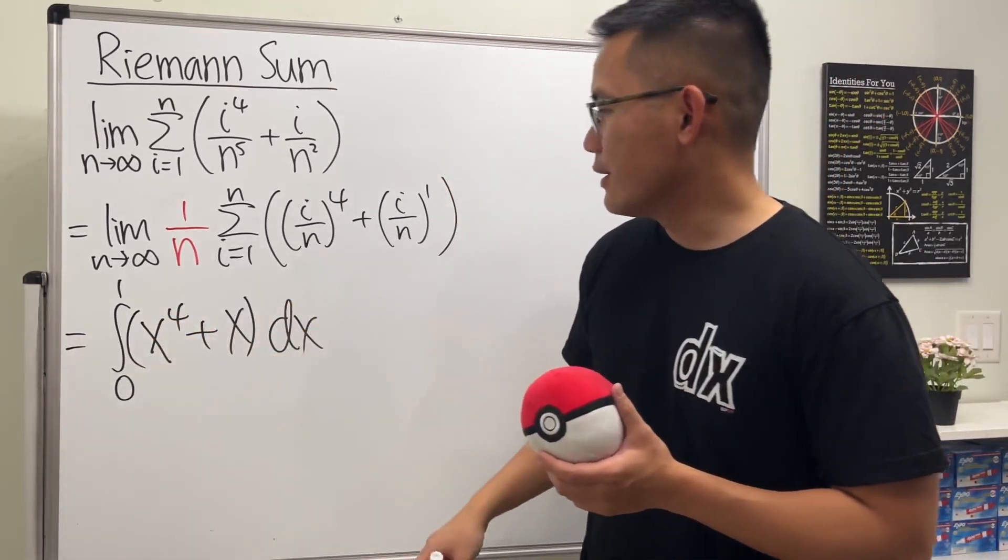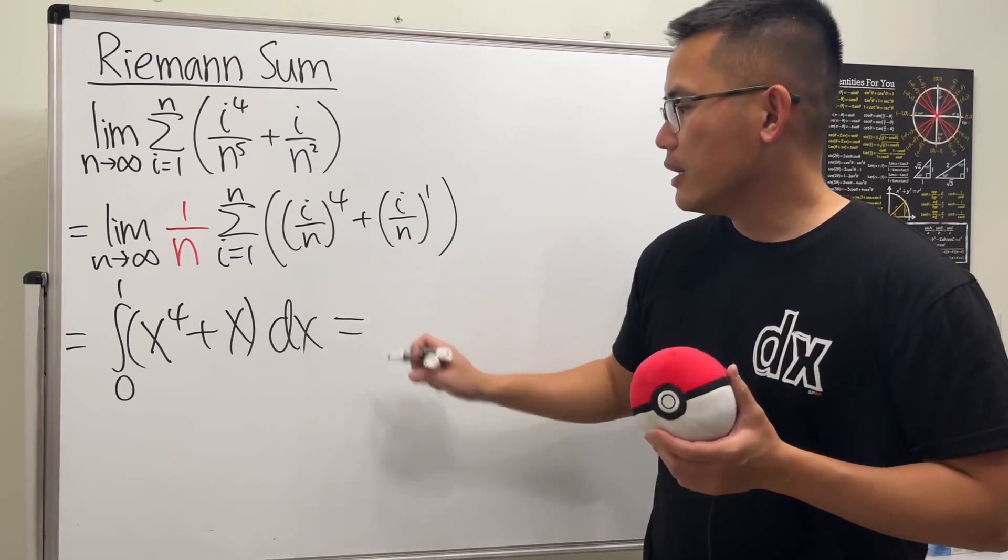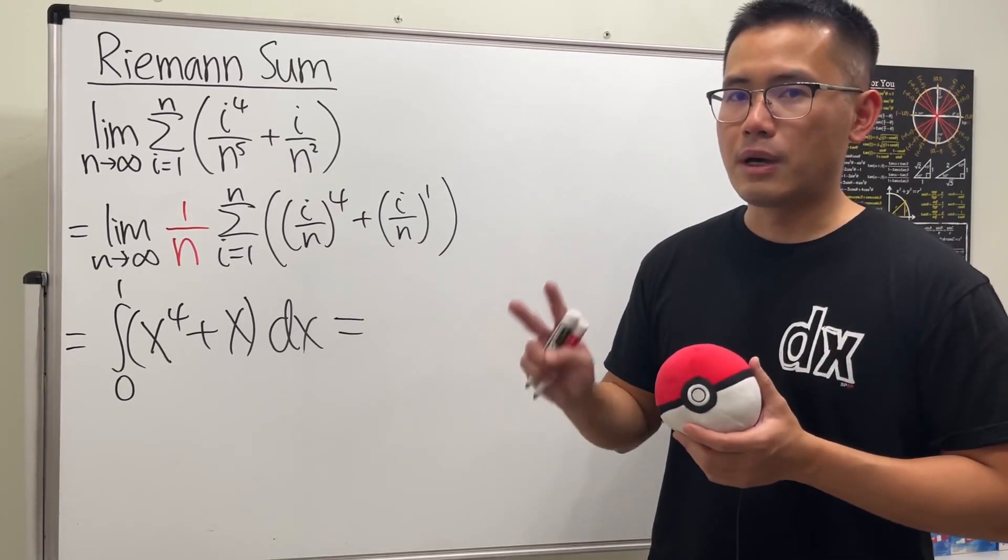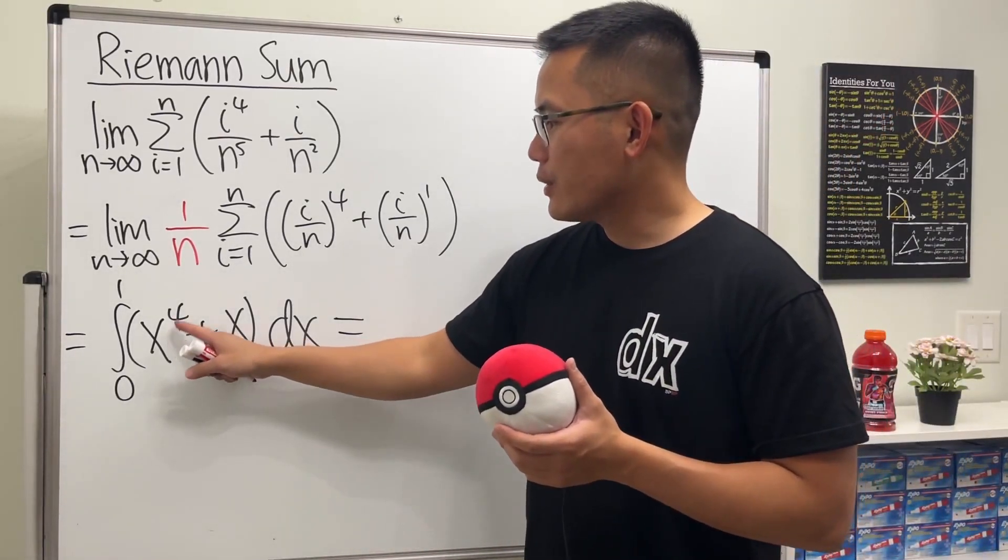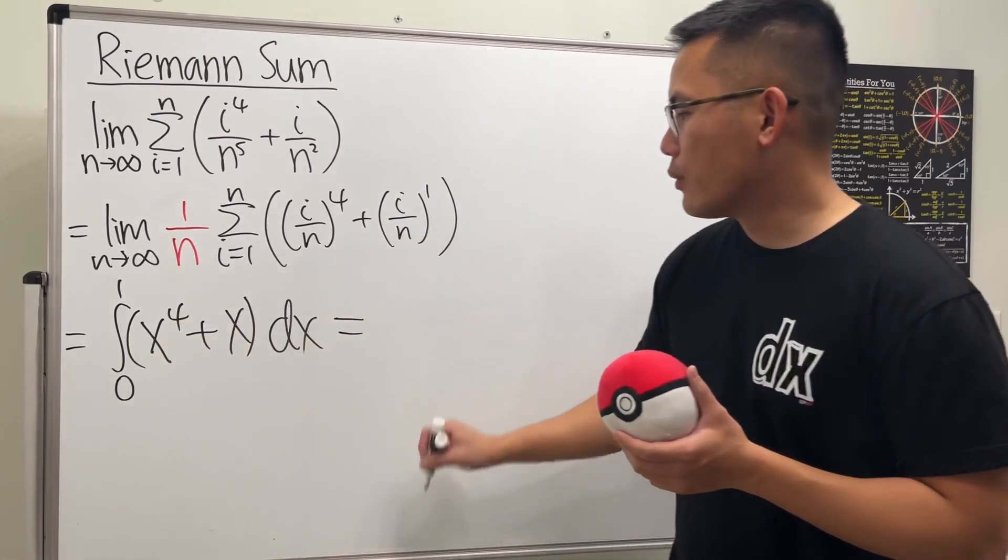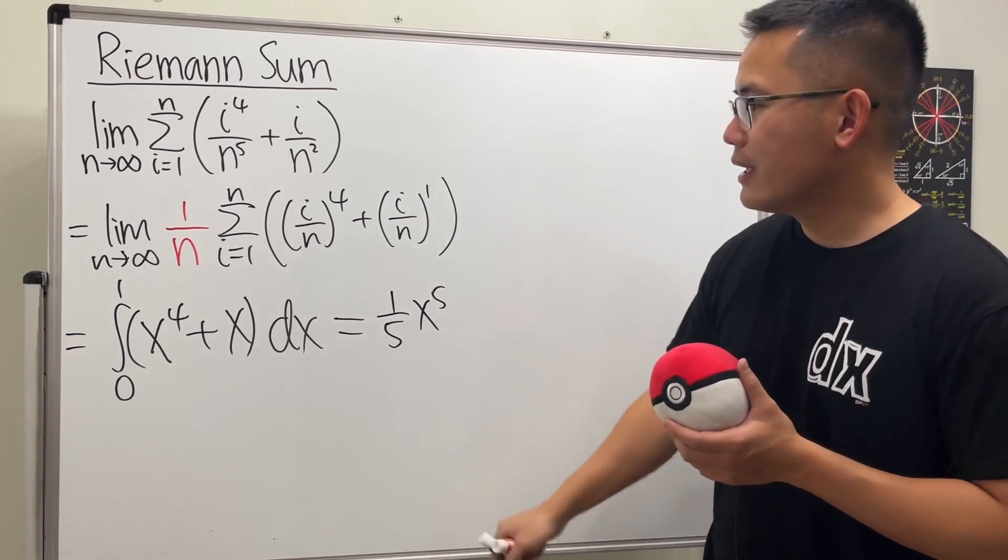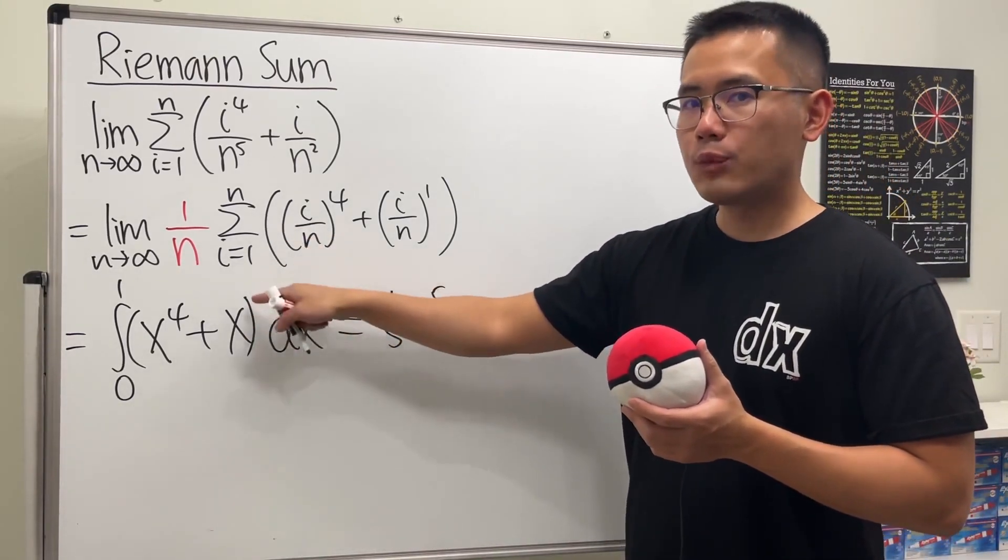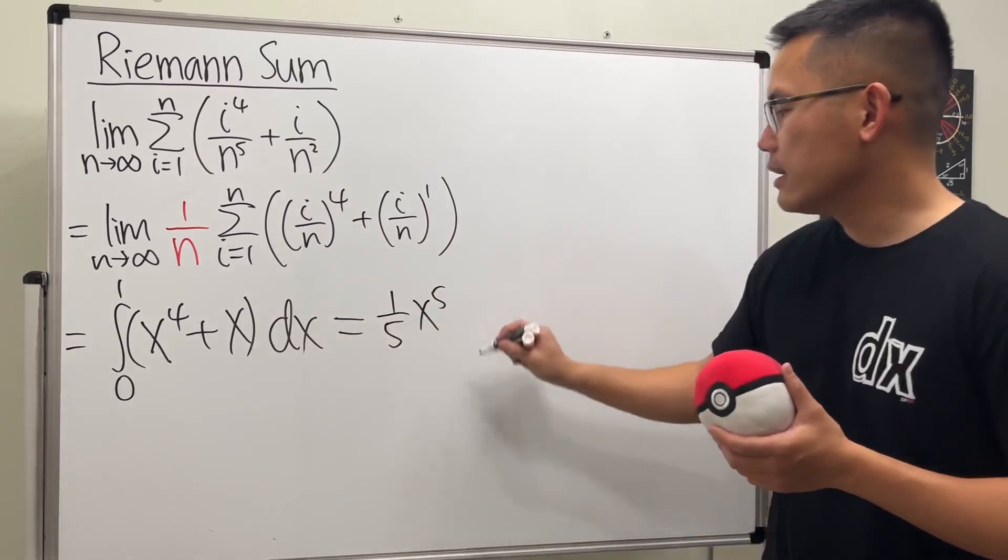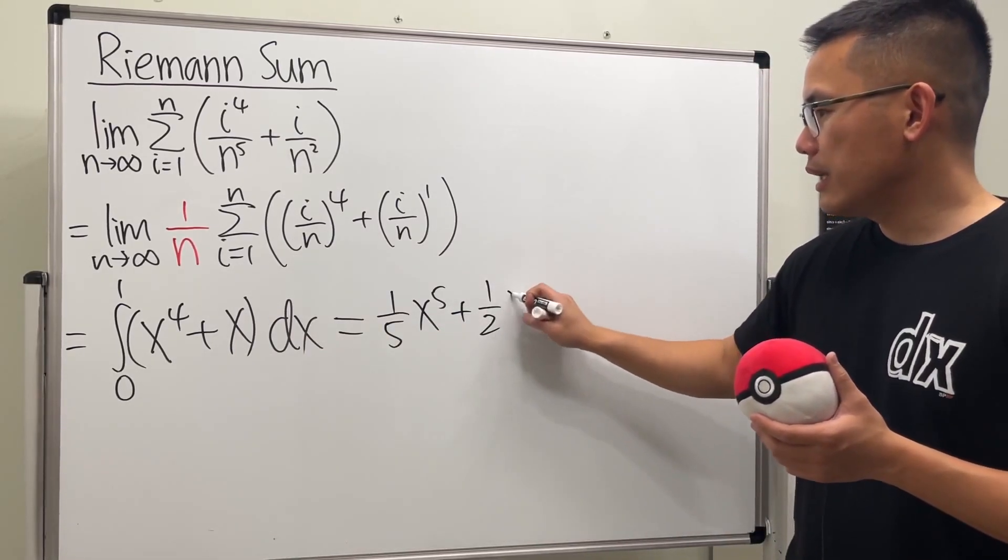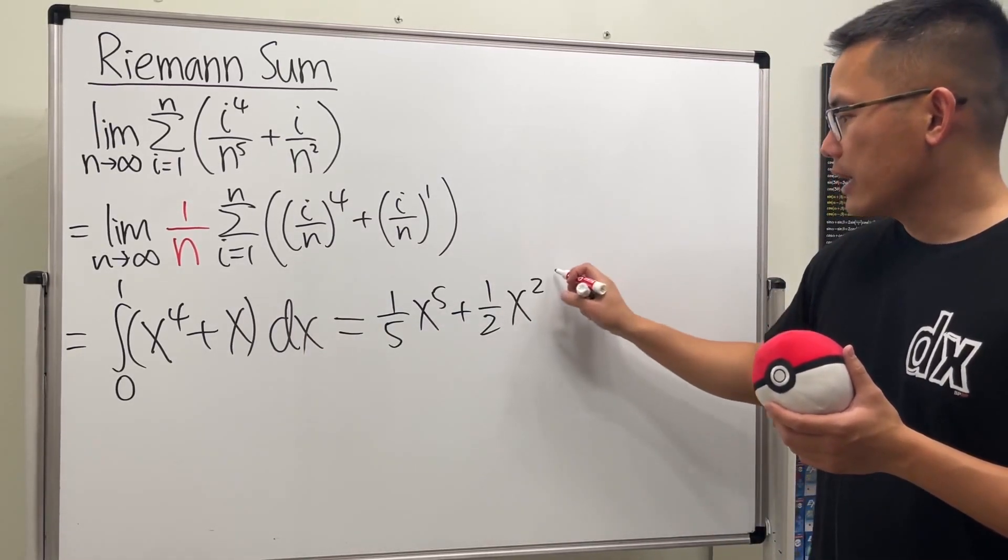All right, and then of course we can just now integrate it. Thanks to the fundamental theorem of calculus part two, we are going to add one to this and divide it by the new power, so we get one over five x to the fifth power. And then do the same thing here: add one to the power which will get two, divided by that, so we get one over two x to the second power.